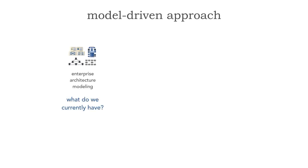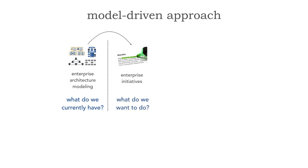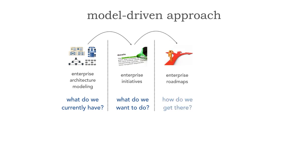When we think about the model-driven approach to enterprise architecture, this is one of the traditional approaches we generally use to really determine how to do a particular initiative. The very first step is to ask: what do we currently have? This involves an enterprise architecture modeling effort to get a picture of our landscape. Then we ask what we'd like to do — now we can pursue an initiative because we have a current state and a complete model of what we have. From there, we develop a roadmap that combines what we need to do with what we currently have.